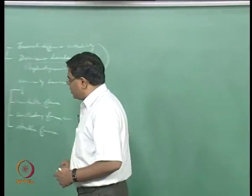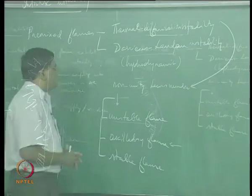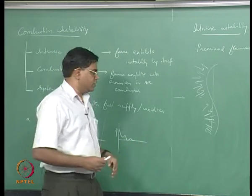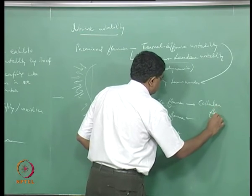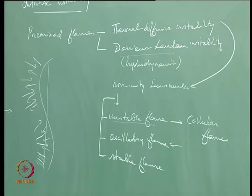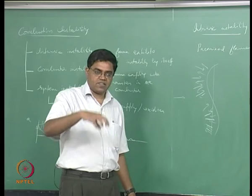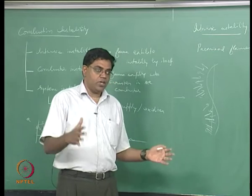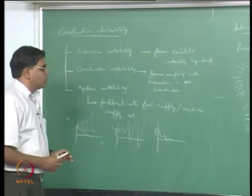In the extreme case where the flame is unstable and curvature keeps growing, you enter a regime called cellular flames. The premixed flame is no longer planar but breaks down into many different cells, reaching a new stable equilibrium as a cellular flame structure.